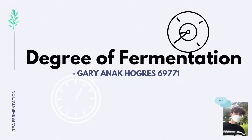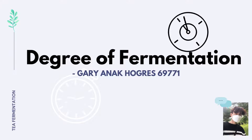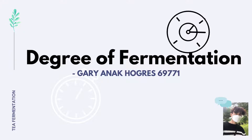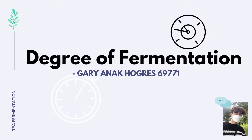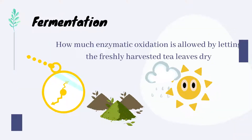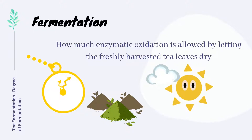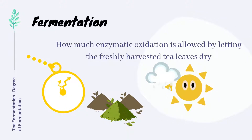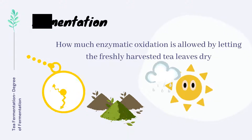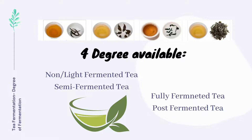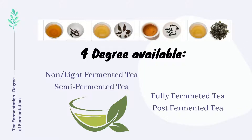Commonly, many types of tea come from the same plant, Camellia sinensis. Still, the different kinds of tea result from additional manufacturing processes according to the degree of fermentation. The term fermentation relates to how much enzymatic oxidation is allowed by letting the freshly harvested tea leaves dry. Teas are classified based on their degree of fermentation: non and light fermented, semi fermented, fully fermented, and post fermented.